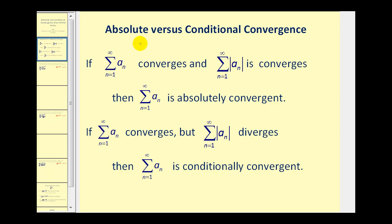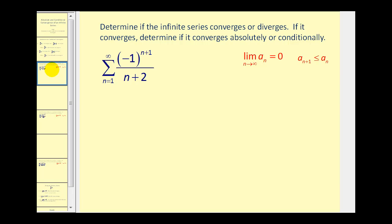To determine absolute versus conditional convergence, we're going to take a look at the given series as well as the absolute value of the given series. The given series is an alternating series, so we'll start by applying the alternating series test. Looking at this infinite series, a sub n would be the non-alternating part of this formula, so a sub n would be one over n plus two.